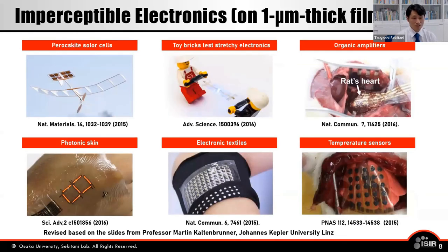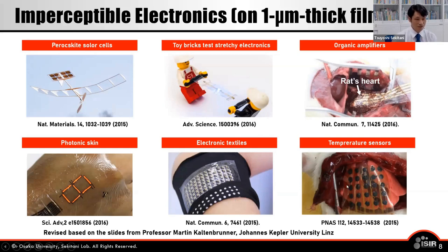The idea of imperceptible electronics is increasingly being used — for example, one-micron-thick solar cells for use on flying gliders, reported by Professor Kaltenbrunner from Johannes Kepler University Linz in Austria. Also digital signage on skin and monitoring living organ activity including heart and lung, reported by Professor Tomoyuki Yokota and Professor Takeya at the University of Tokyo. Because of imperceptible electronics, long-term measurement can be taken without invasiveness to soft organs and skin, and this is being considered for new medical applications.